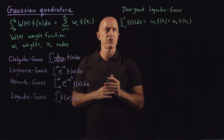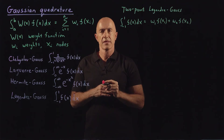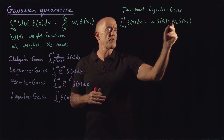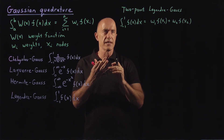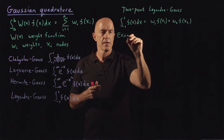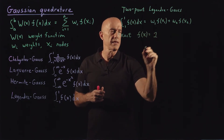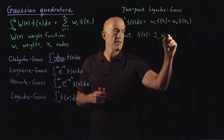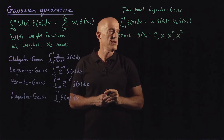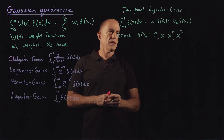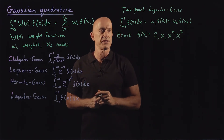The idea behind Gaussian quadrature is that it should be exact for f being a low-degree polynomial. If you have four parameters to vary — w_1, w_2, x_1, and x_2 — then it should be exact for polynomials up to order x cubed. So it should be exact for f(x) equals a constant, x, x squared, and x cubed. These are the basis functions for all polynomials of order 3 or lower. We make this exact for these functions, which gives us four equations and four unknowns.